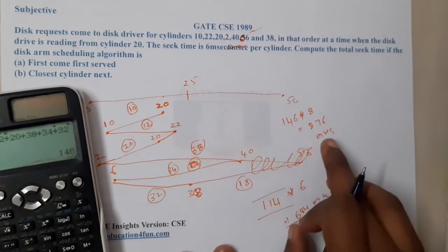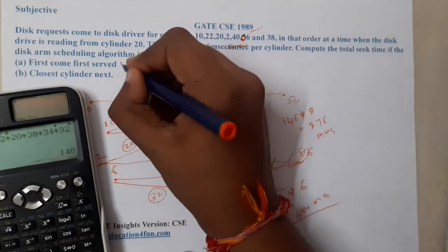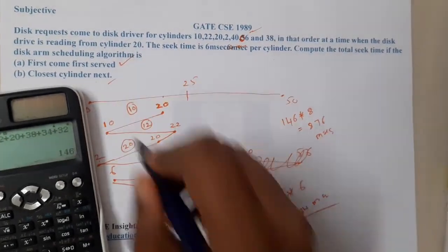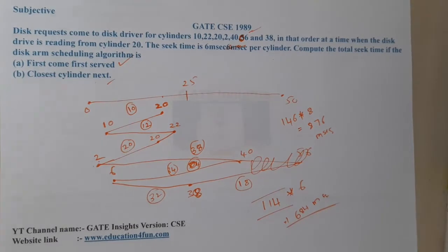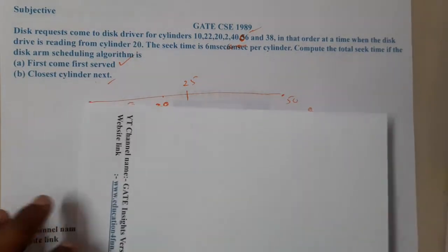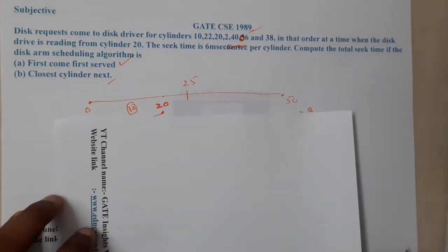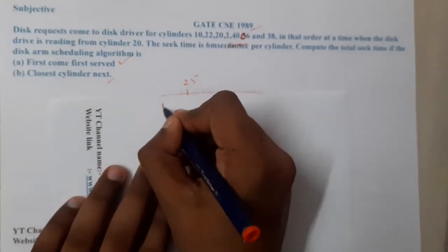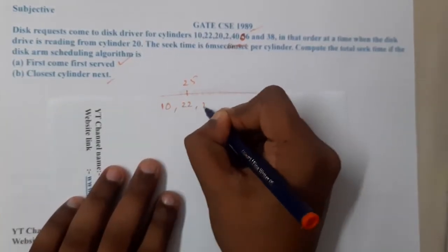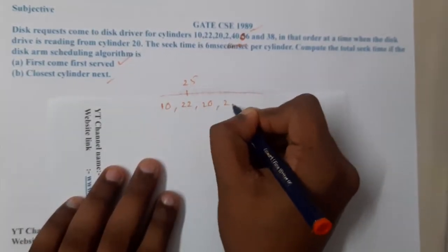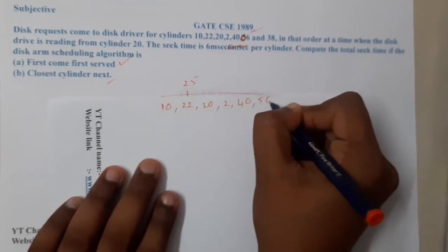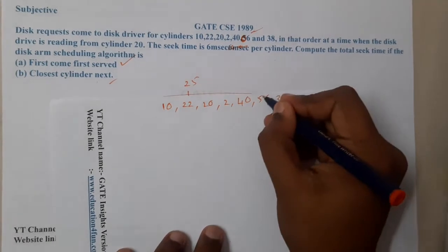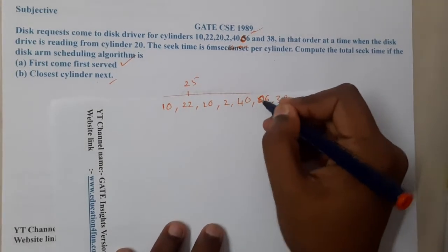So that's a small printing mistake. If the value is 56, FCFS gives 684ms; if the value is 6, FCFS gives 876ms. Now let us continue with the Closest Cylinder First (SSTF) algorithm. The request queue is: 10, 22, 20, 2, 40, 06, and 38.